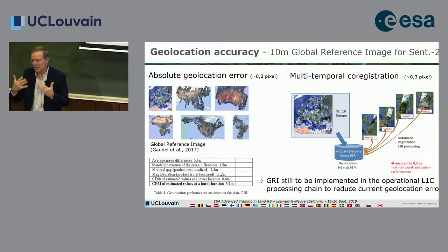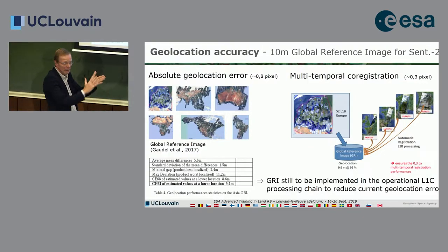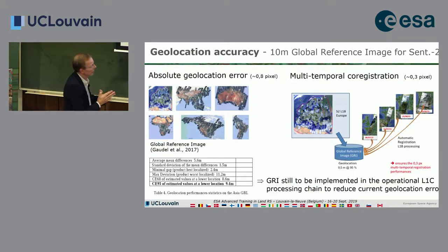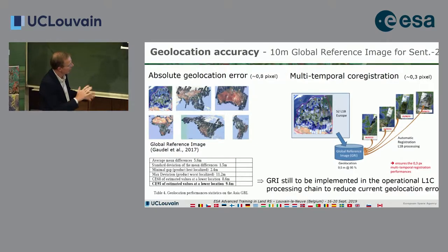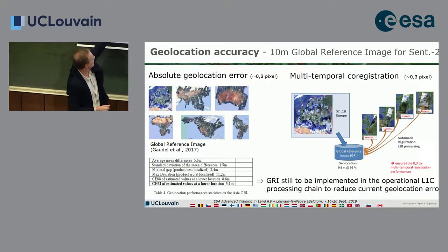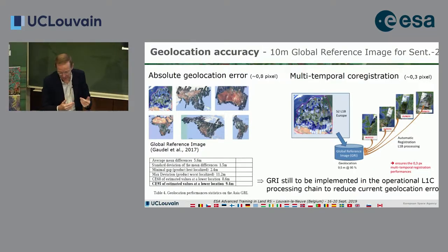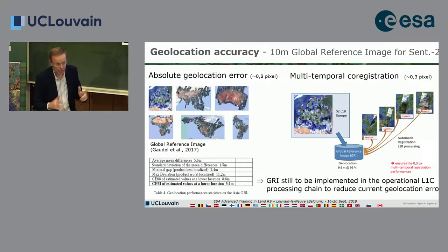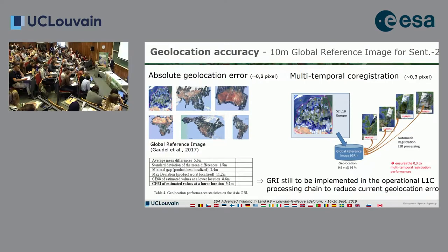The global reference image will be fully cloud-free for the whole planet and will allow matching all new images to it, which should be very well calibrated. Today for Asia, with the current global reference image, there is an error of half a pixel. We heard on Monday that the global reference image will be ready by end of year, which is very good news. This impacts the level 1C imagery.